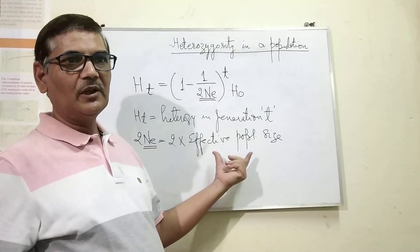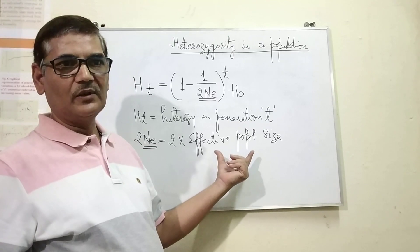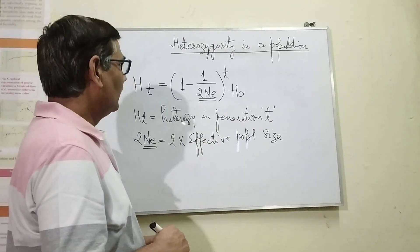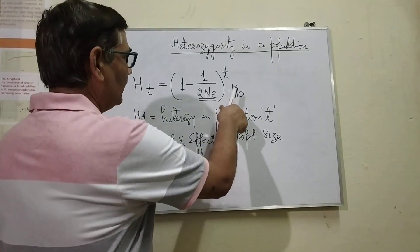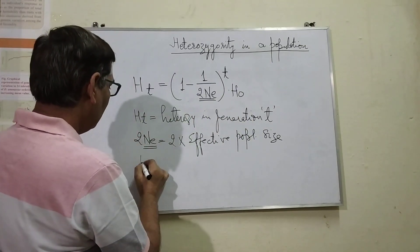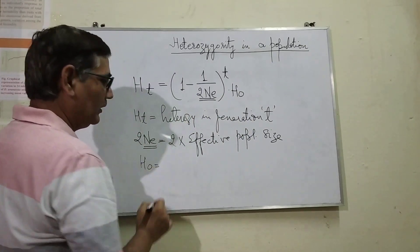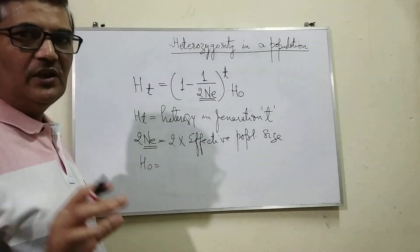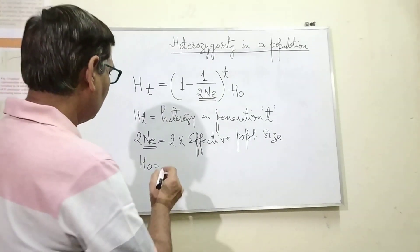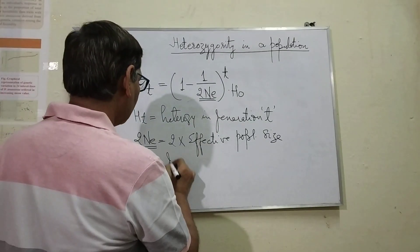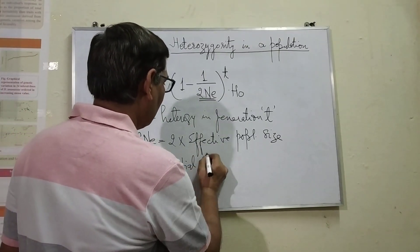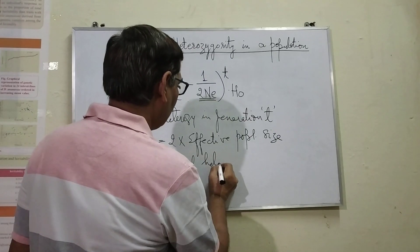So whatever their number is, that number will be multiplied by 2. Then, Ho stands for the initial heterozygotes — Ho indicates initial heterozygotes.